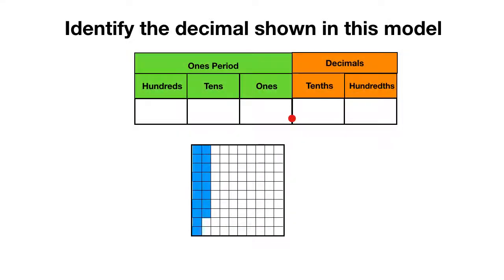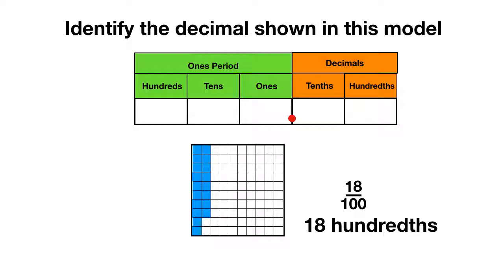Here's your last problem for today. Identify the decimal shown in this model. Here's your place value chart and your model. Select all the correct answers. You can count that we have ten, eleven through eighteen pieces — eighteen hundredths shaded. As a fraction it's eighteen out of one hundred. And as a decimal it's .18 with that one in the tenths place and eight in the hundredths, because eighteen hundredths is the same as one tenth and eight hundredths. So from today, remember: hundredths are the second decimal place value.